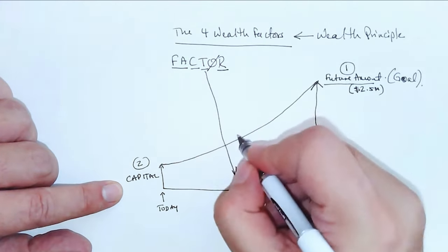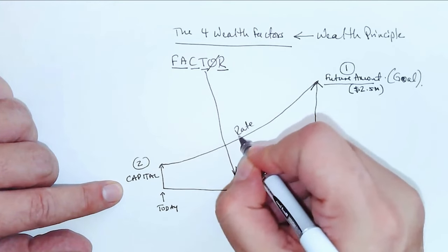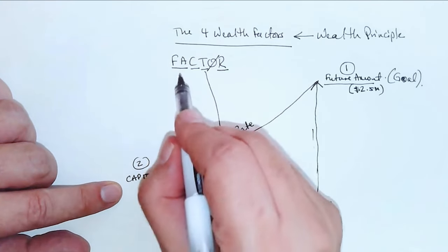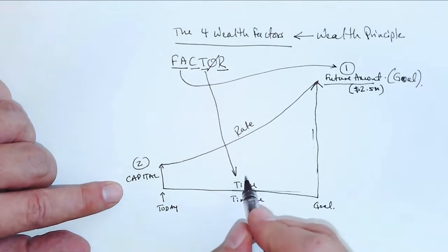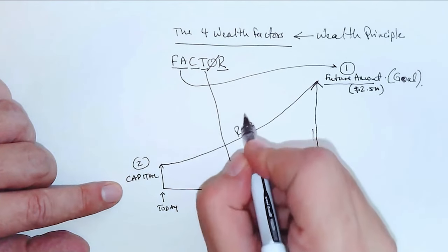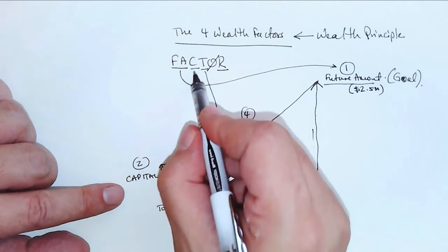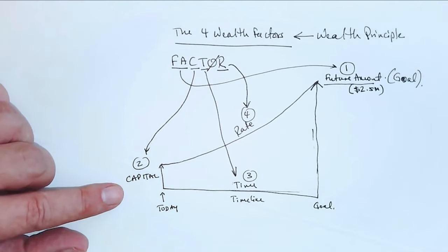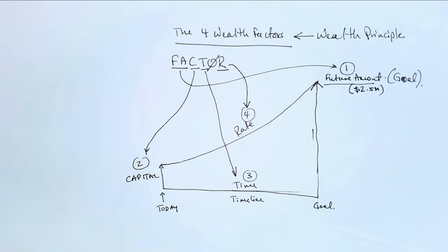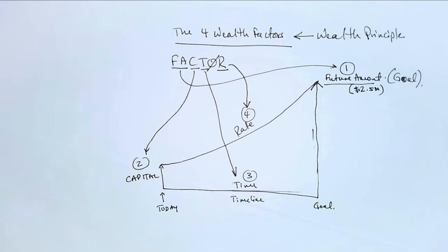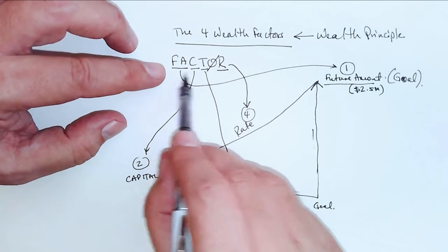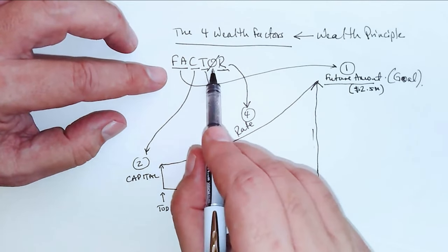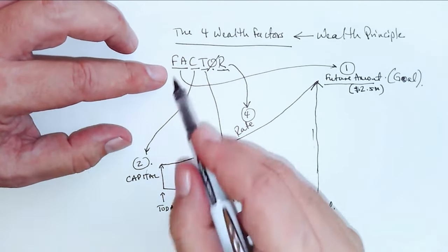Third factor is time. And the last one is R for rate. So when it comes to building wealth these are your only factors. I'm going to write here three and four: capital, time, and rate. This is critical that you understand these because there are no other factors. These are the only factors. And the reason I call them factors is because it's an acronym: FACTOR without the O. So you can remember what these are: F-A-C-T-R.